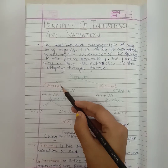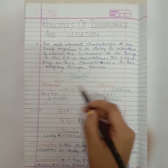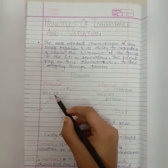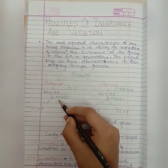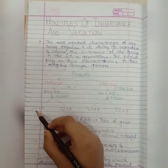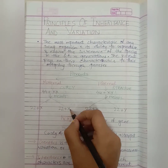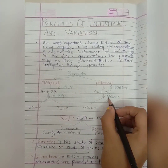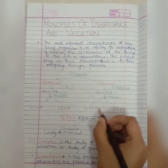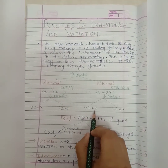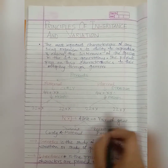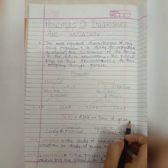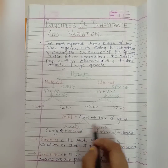Consider this example: the mother has curly hair and the father has straight hair. The mother has 44 + XX chromosomes, which will undergo meiosis and result into 22 + X and 22 + X. The father has 44 + XY chromosomes, which will undergo meiosis and result into 22 + X and 22 + Y.